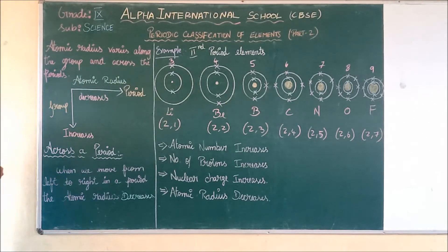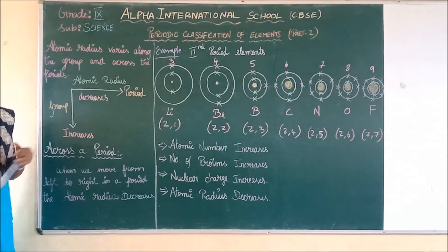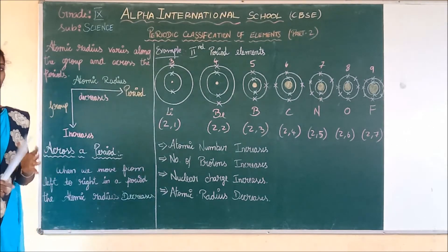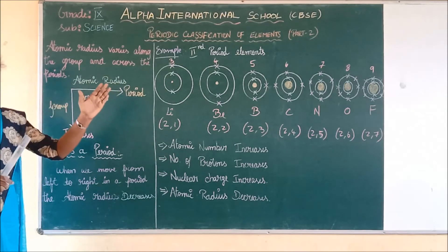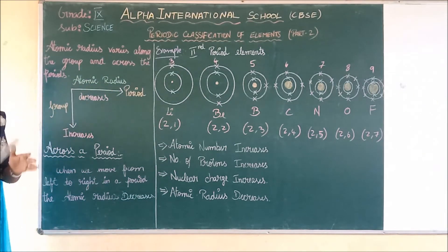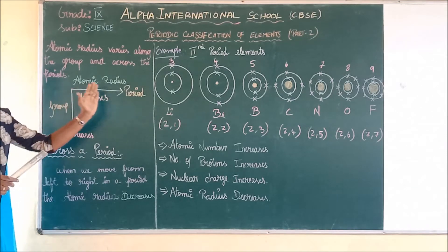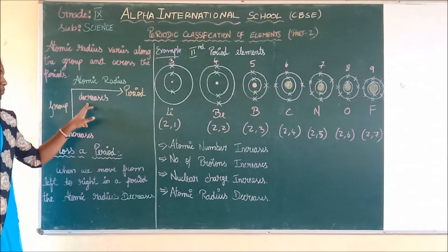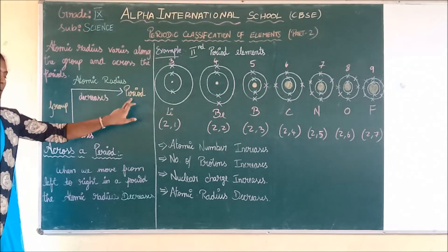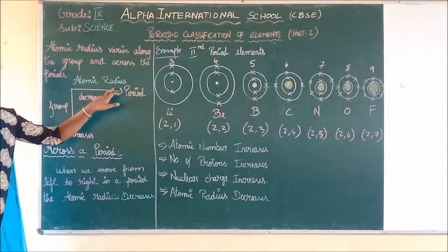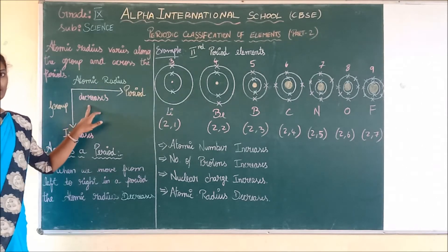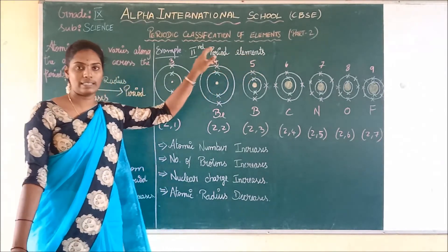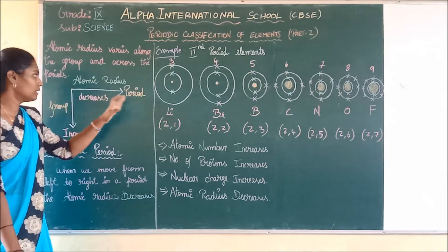Let us see how the atomic radius varies along the group and across the period. When we move from left to right across a period, the atomic radius decreases. Let us take second period elements as an example.